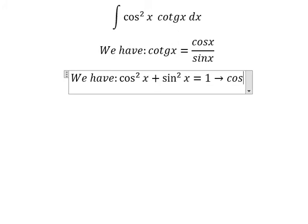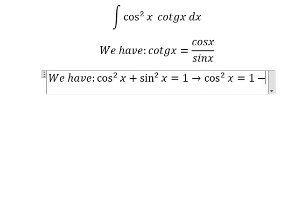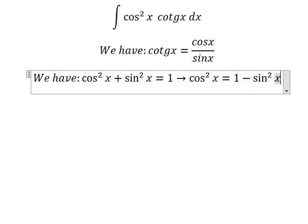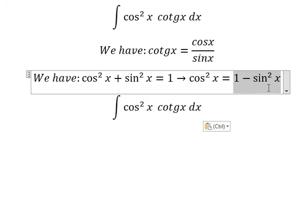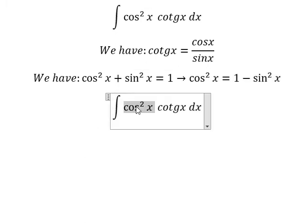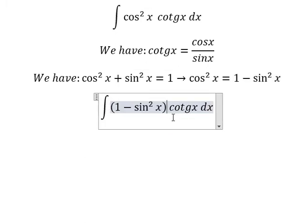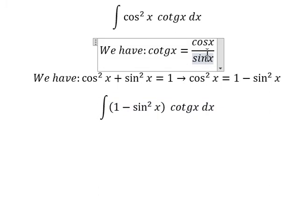So we have cosine squared x equals one minus sine squared x. We change cosine squared x by this expression and cosine x by this one.